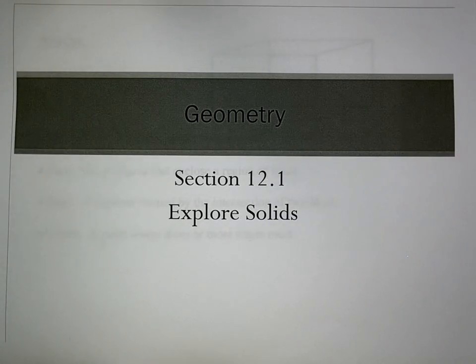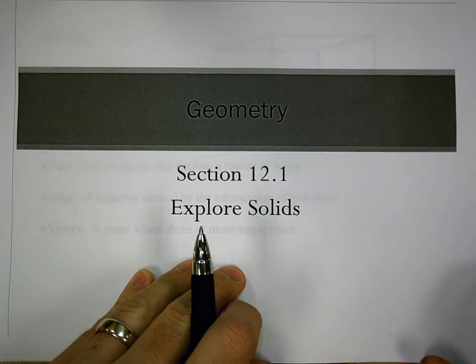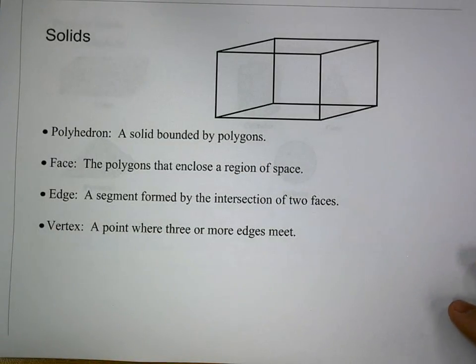Section 12.1 is the introduction to geometric solids. The rest of the chapter is going to look at surface area and volume of these geometric solids, but this will at least provide us the introduction to these types of objects we'll be looking at.